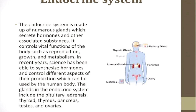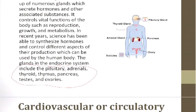The endocrine system is made up of numerous glands which secrete hormones and other associated substances. It controls vital functions such as reproduction, growth, and metabolism. In recent years, science has been able to synthesize hormones and control different aspects of their production. The glands in the endocrine system include the pituitary, adrenals, thyroid, thymus, pancreas, testes, and ovaries — all important to know as part of this system.